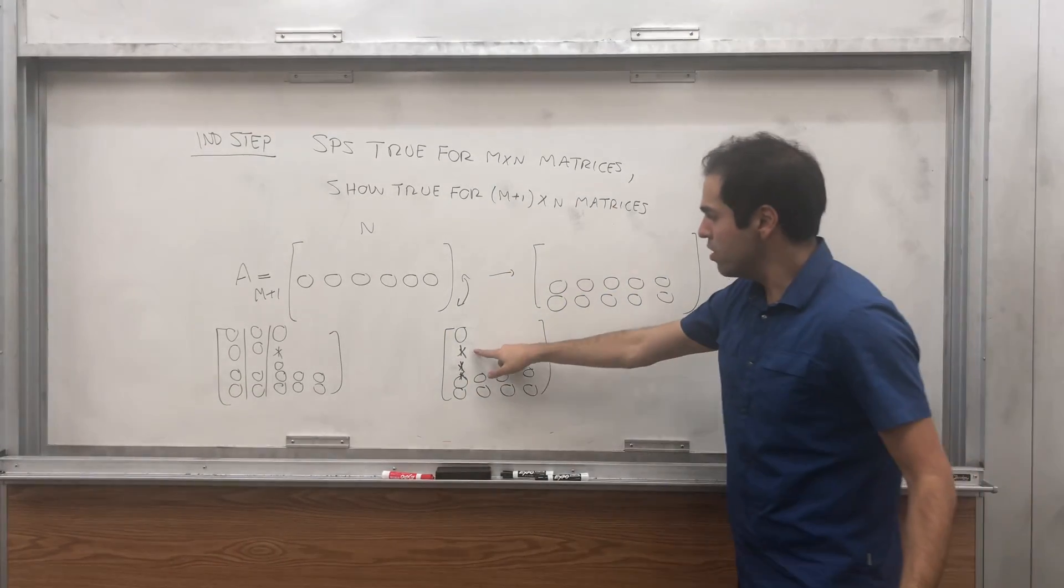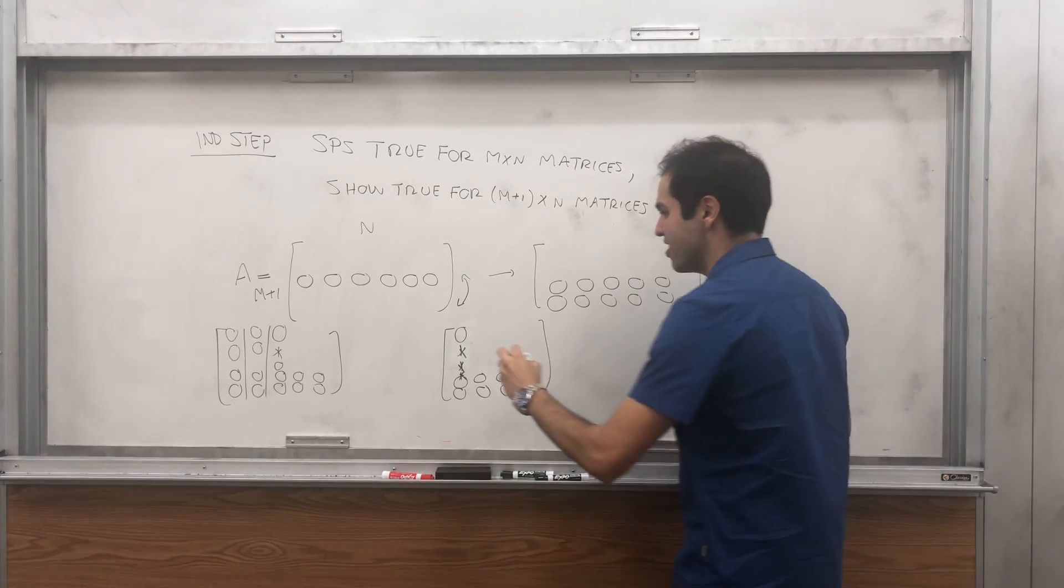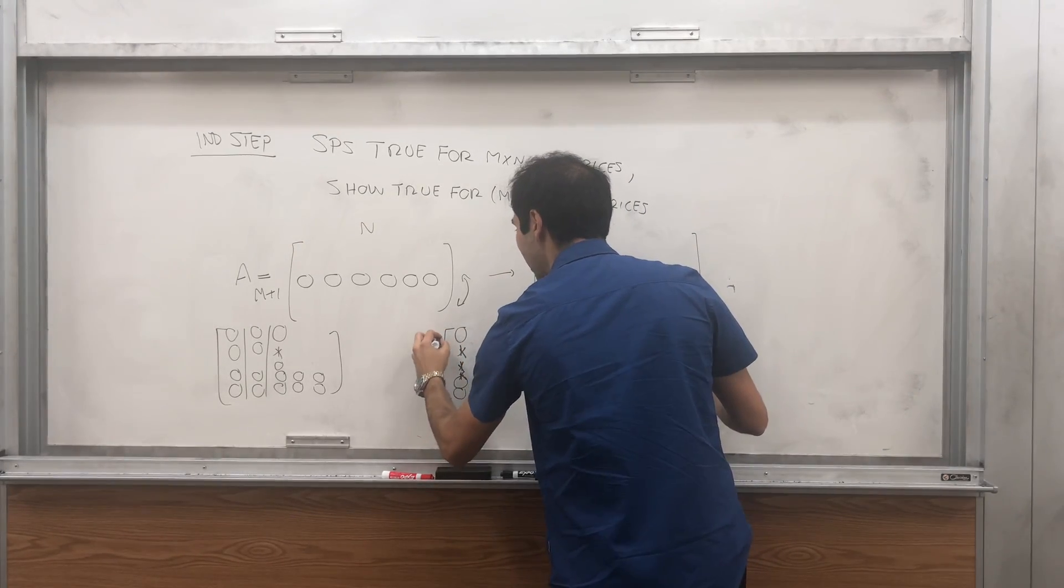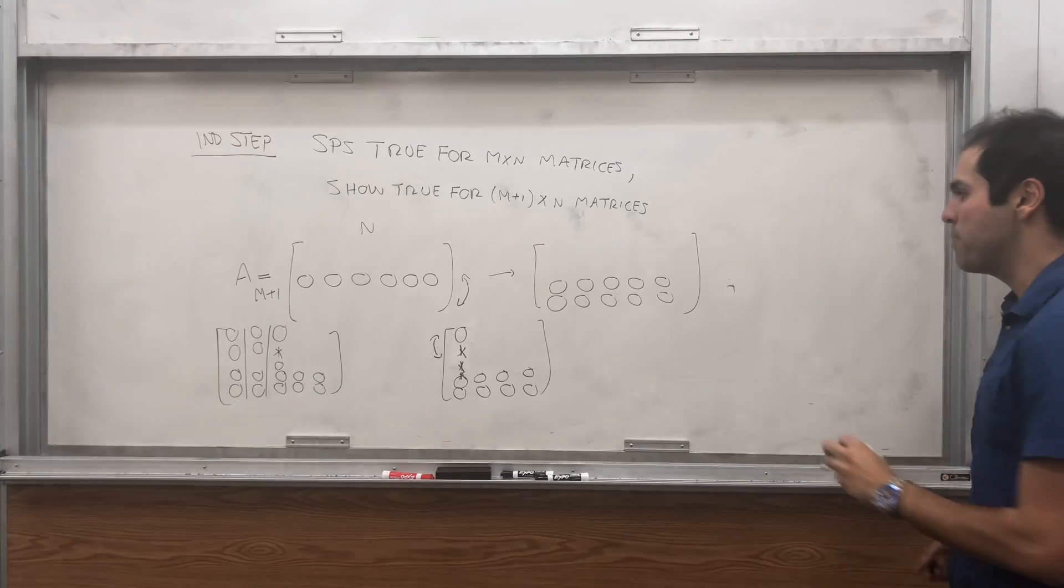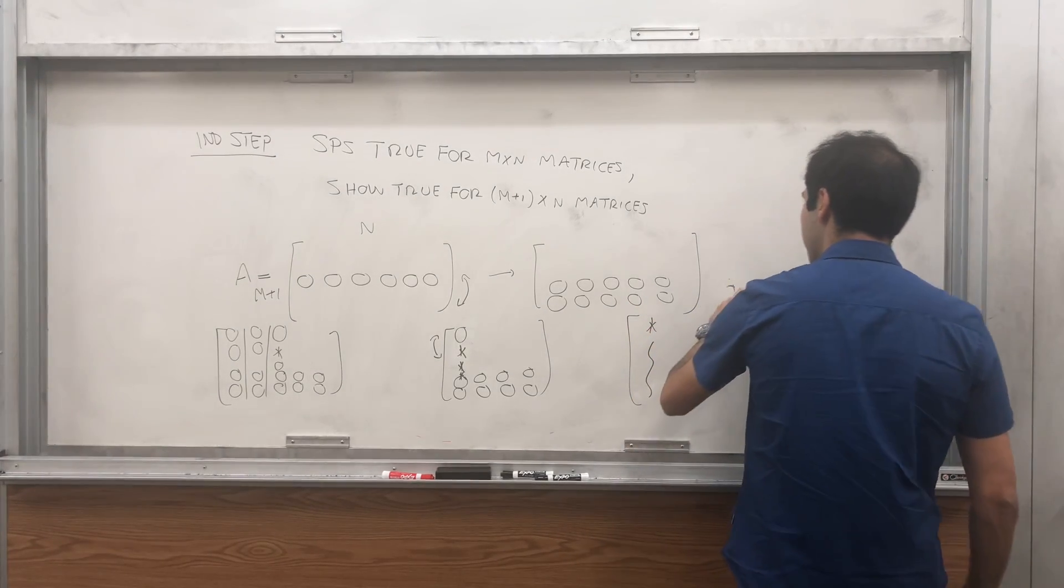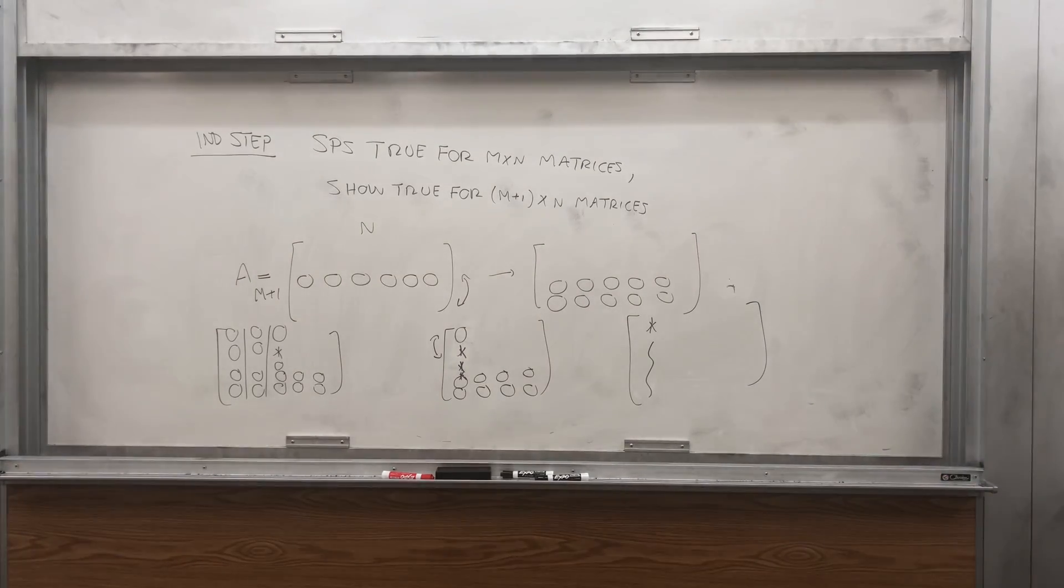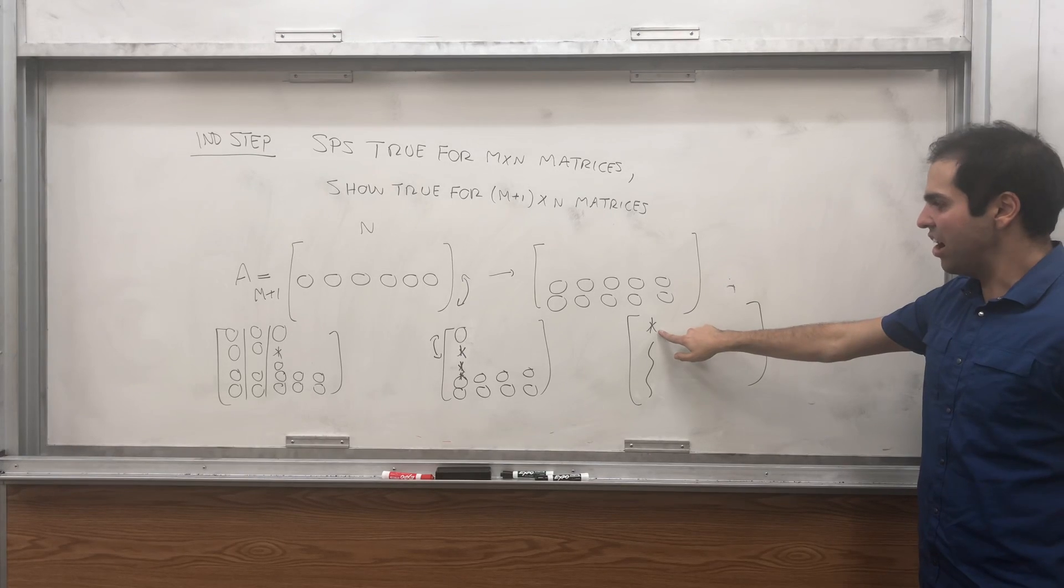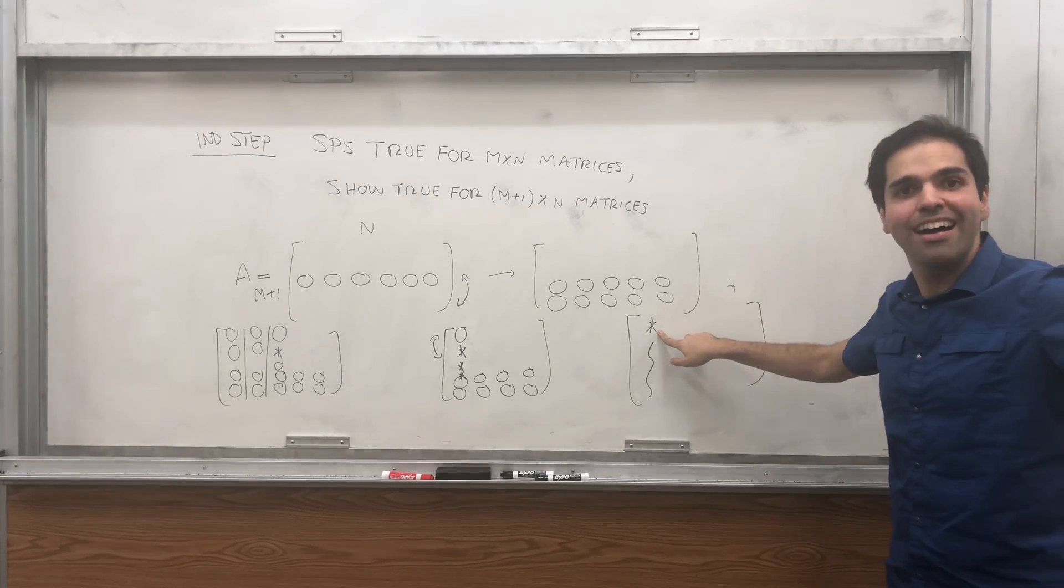So we have the first non-zero entry and then a bunch of other non-zero entries. Doesn't matter. Now, make sure using interchanging the two rows, that this non-zero entry is at the top.